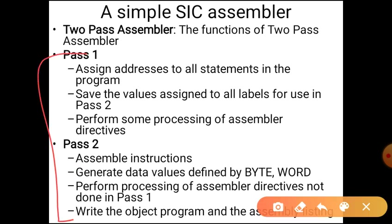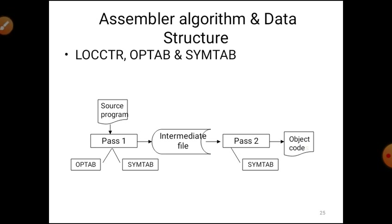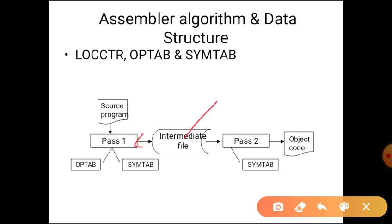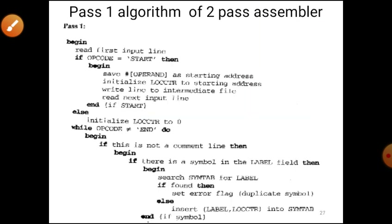You have to remember these different functions performed during pass one and pass two — this is very important. Various data structures are used during both passes. These include LOCCTR (location counter), OPTAB (opcode table), and SYMTAB (symbol table). Pass one generates an intermediate file that is used by pass two.